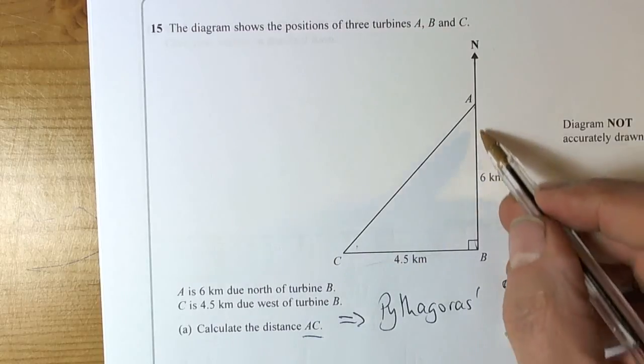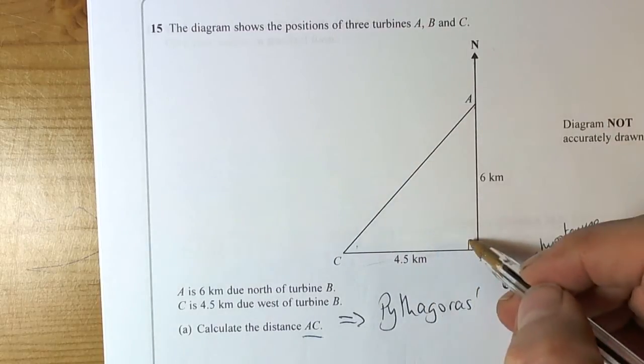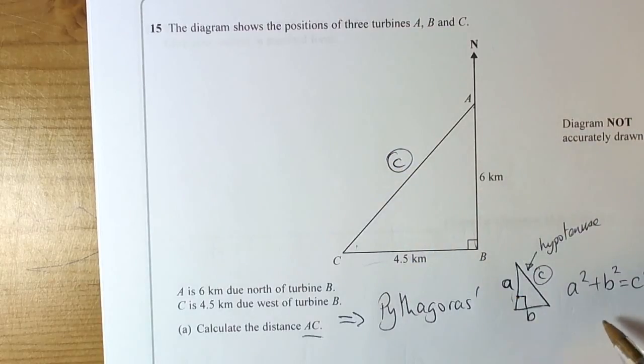So here we've got the two short sides. This is the hypotenuse because it is opposite to the right angle, so that becomes our C value.